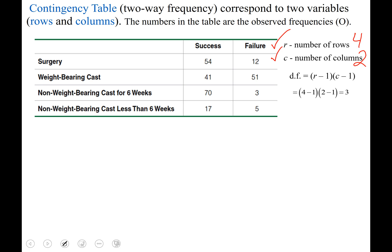The degrees of freedom is calculated by the number of rows minus one, multiplied by the number of columns minus one. So in this example it would be three.